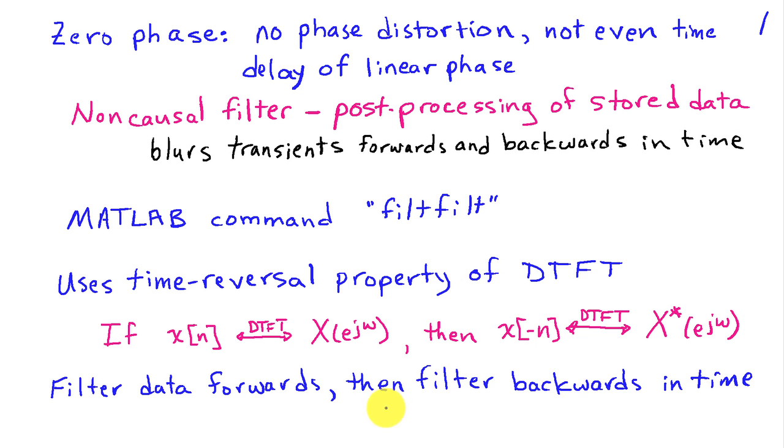So the way the zero phase filtering works is first we filter the data forwards, and then we do a time reversal, filter the data backwards in time, and then we do another time reversal to get the order of the signal correct.